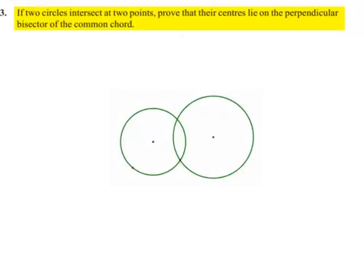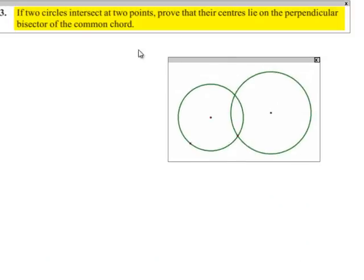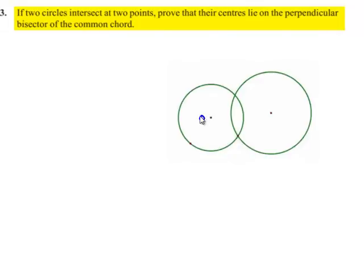Moving on to the solution, let us consider two circles as shown in the figure. Let the centers be O and O'. They intersect at the common points A and B, so AB will be their common chord. We need to prove that OO' is perpendicular to AB. Let us assume that OO' intersects AB at M, and AM is equal to MB.